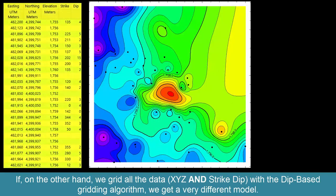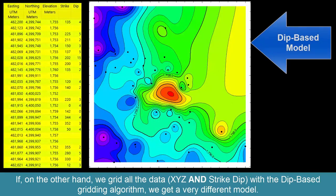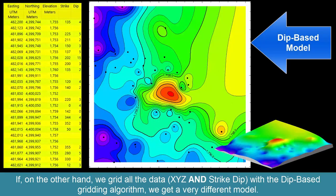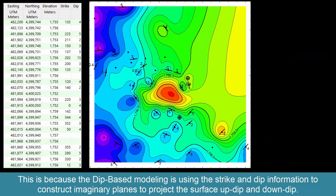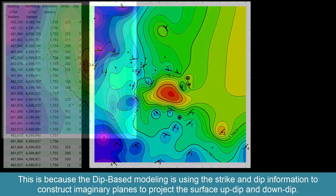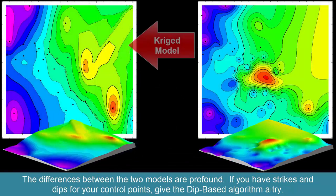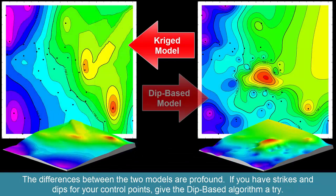If, on the other hand, we grid all the data — XYZ and strike dip — with the dip-based gridding algorithm, we get a very different model. This is because the dip-based modeling uses the strike and dip information to construct imaginary planes to project the surface up dip and down dip. The differences between the two models are profound.